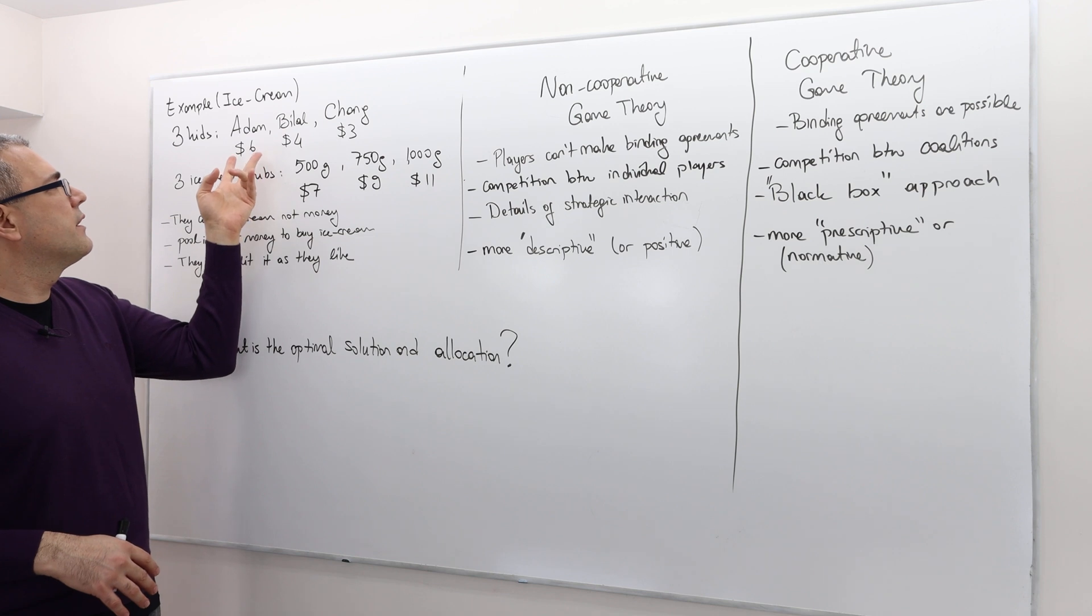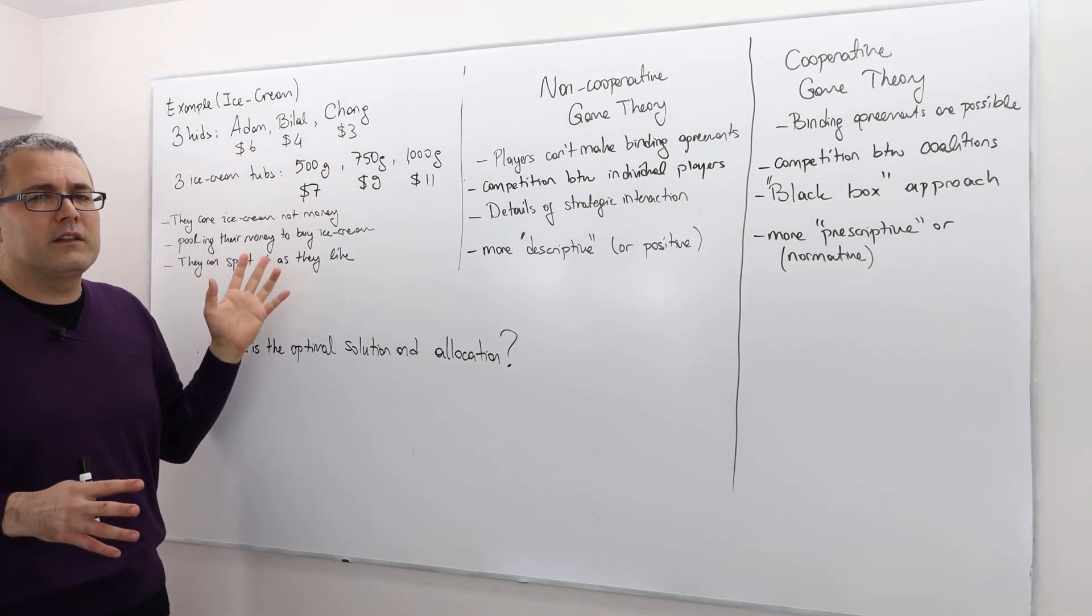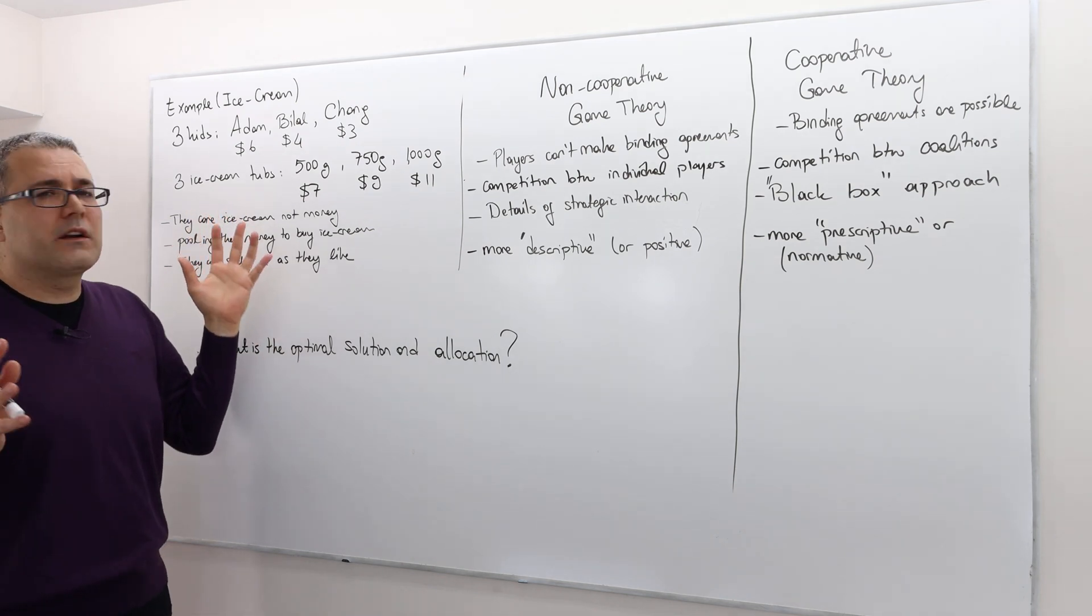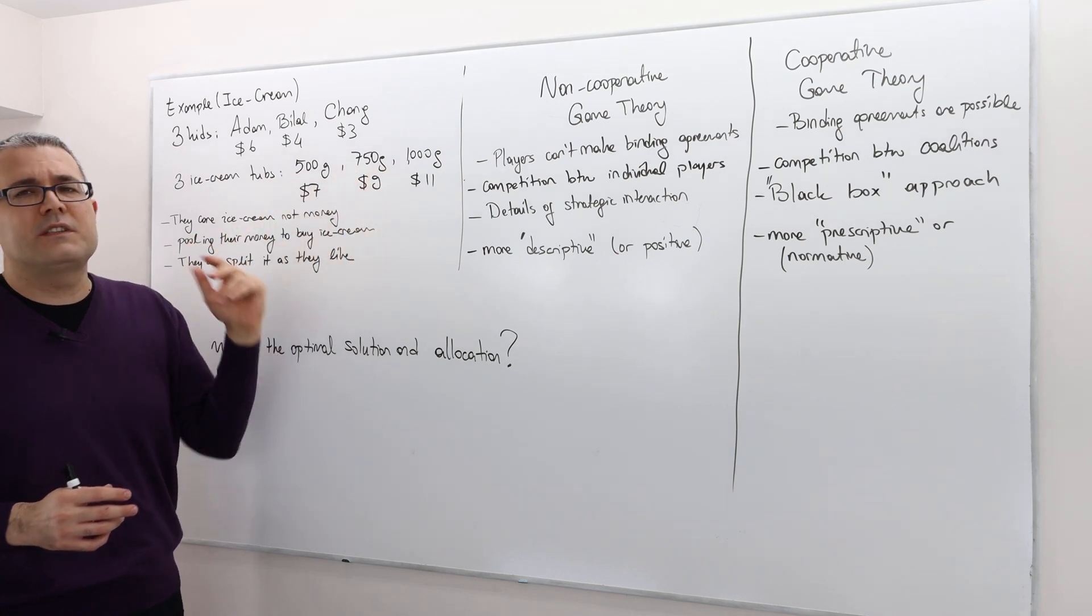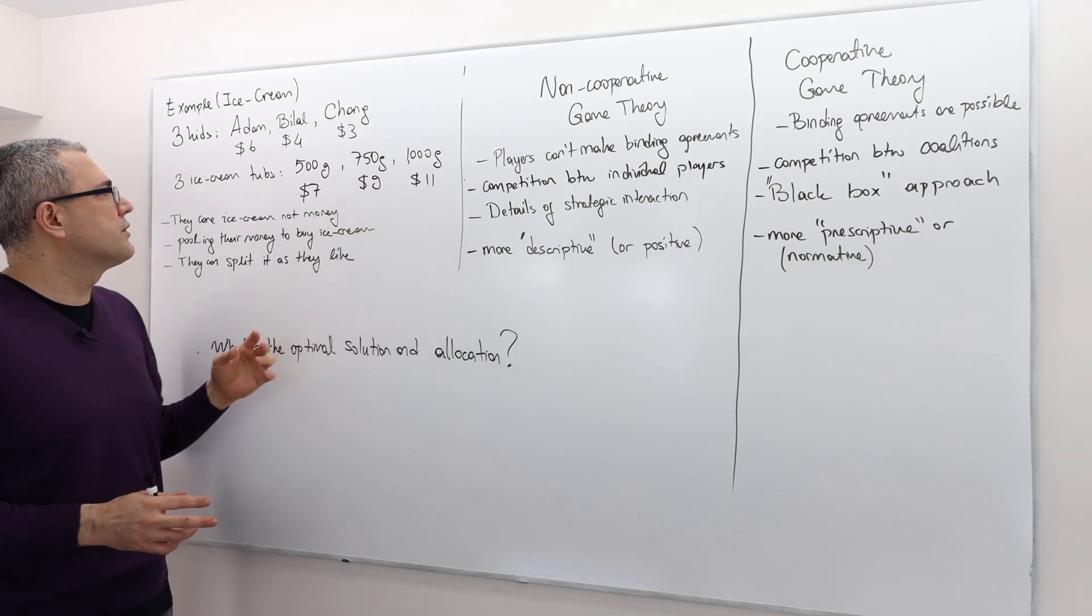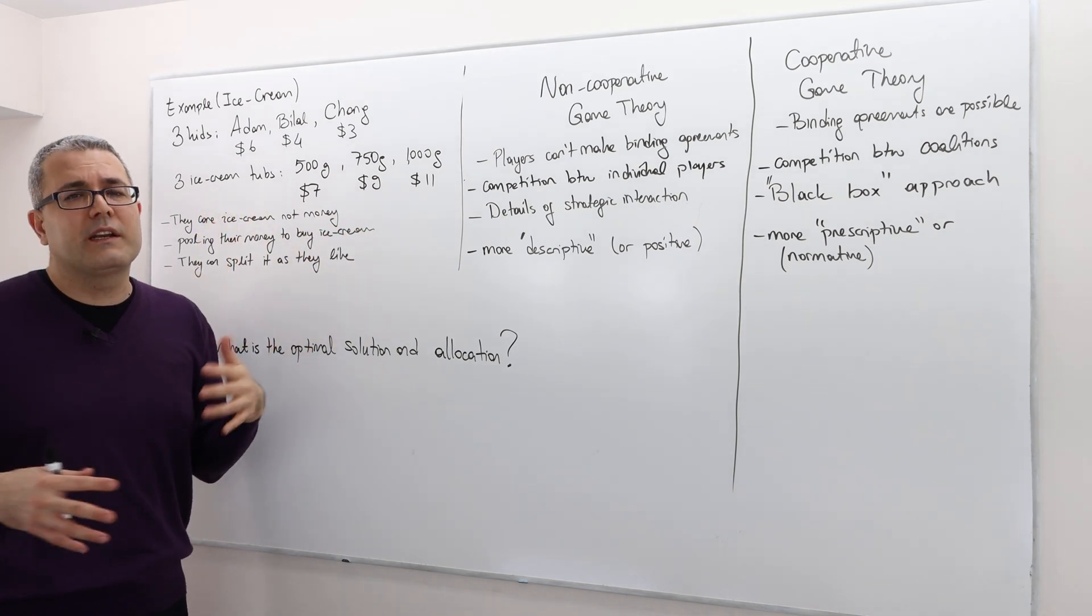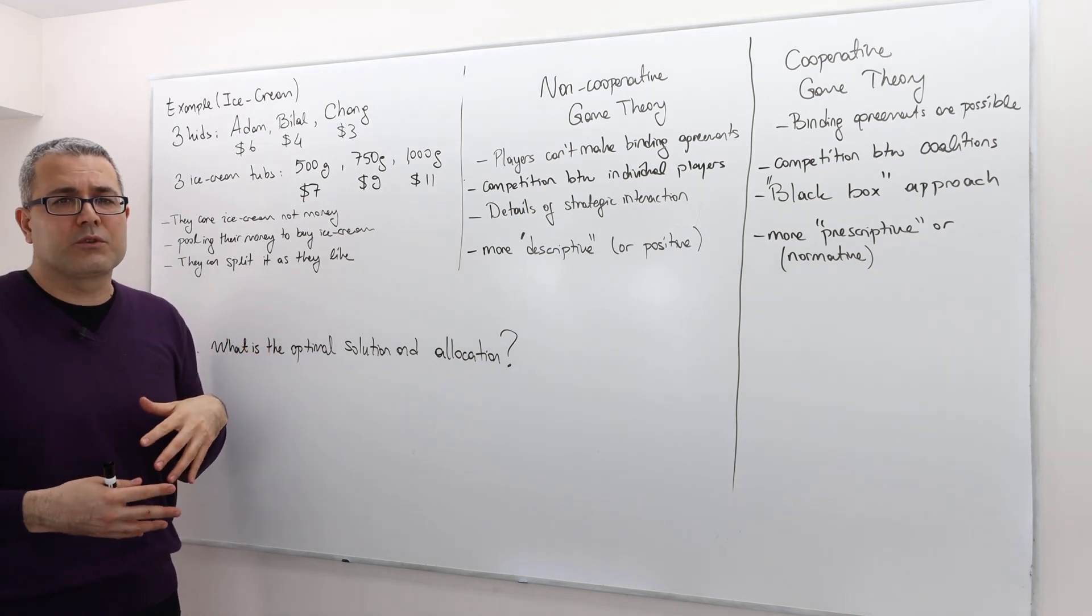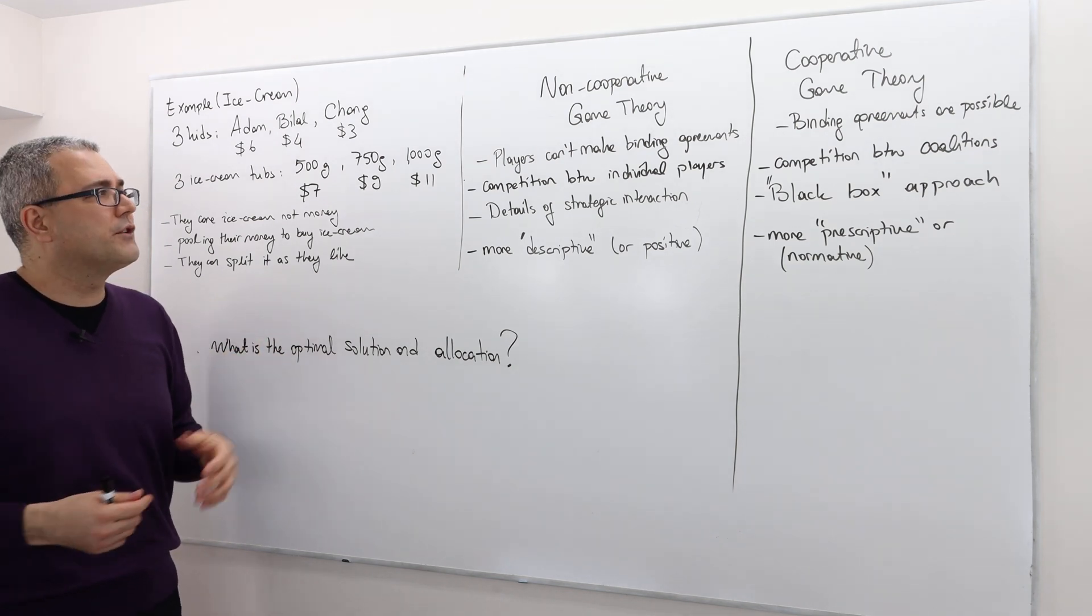There are three kids with $6, $4 and $3. They don't care about the money they have, they want to buy ice cream. And there are three tubs of ice cream, the small 500 gram, medium 750 gram and large 1000 gram. And these are the price of those ice cream tubs. As you see, nobody, no player can buy ice cream alone. So they have to pool in their resources and then they need to decide how to split, who is going to get how much.